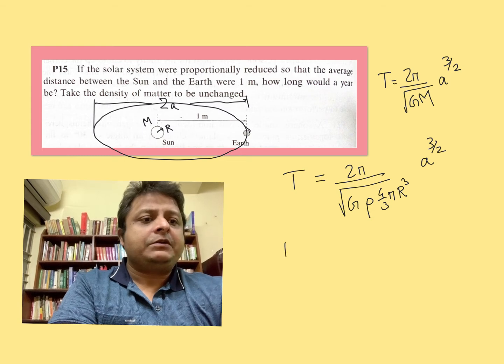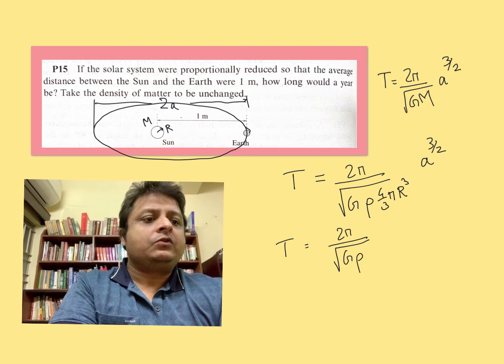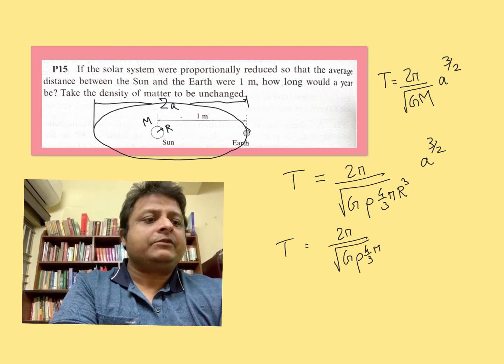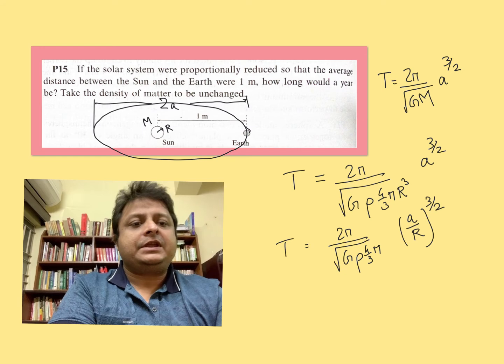Now you have the time period as 2π divided by the square root of (G ρ 4/3 π). The main thing is that it is (a/r) to the power 3/2. Now when this (a/r) to the power 3/2...